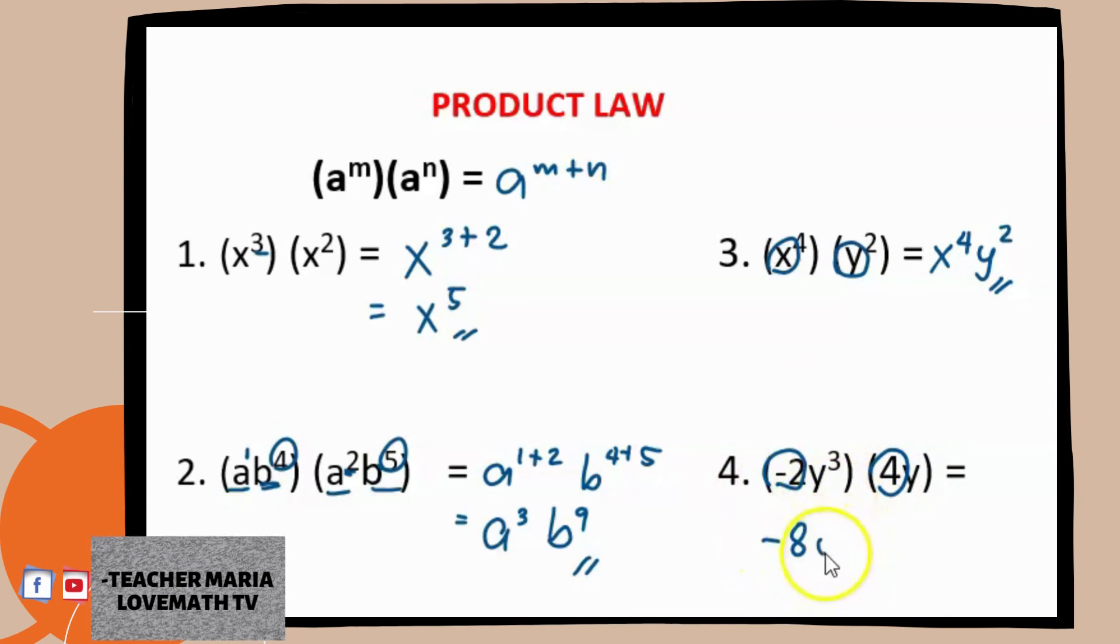And then we just have to add the exponents of our base. So we have 3 here, and since we have here no exponents, we have 1 as the invisible exponent of this one. So 3 plus 1. Having that, your final answer will be negative 8, y raised to 3 plus 1, 4.